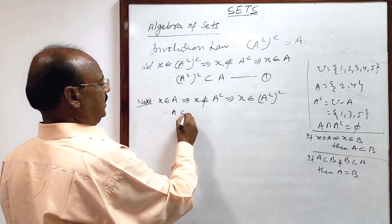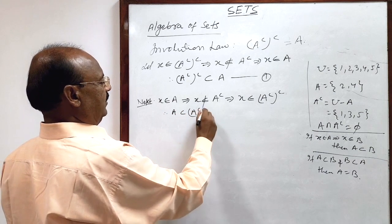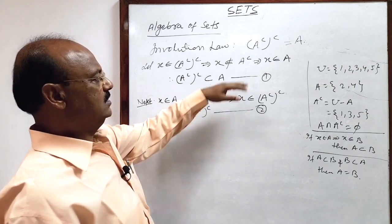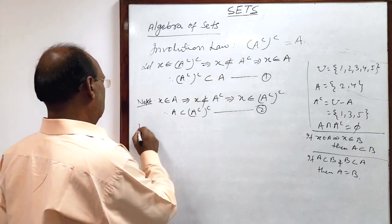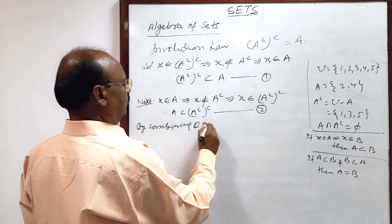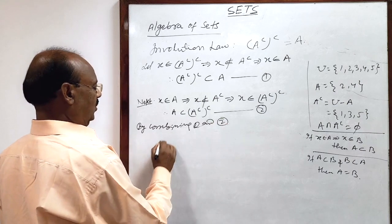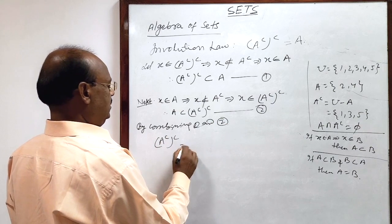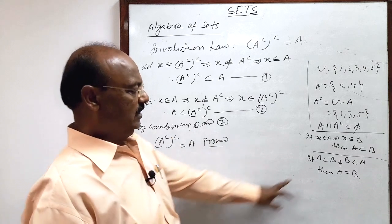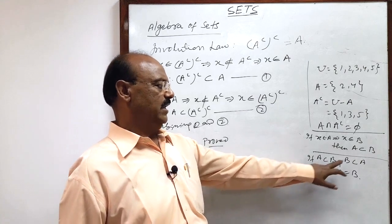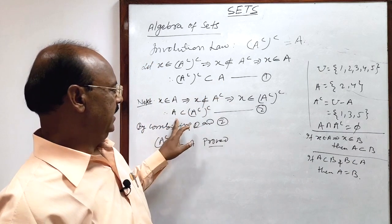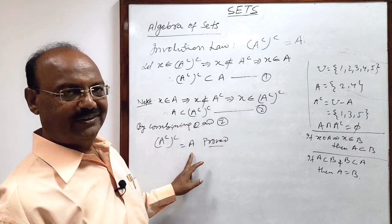So we had started with the right-hand side and arrived at the left-hand side. Therefore, set A is a subset of complement of A complement — relation number two. By combining relations 1 and 2, we get that the complement of A complement is equal to set A; LHS equals RHS, using the property that if A is a subset of B and B is a subset of A, then A equals B.